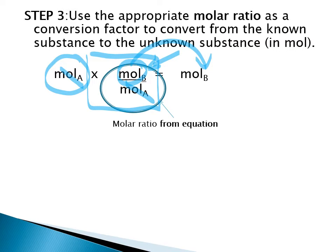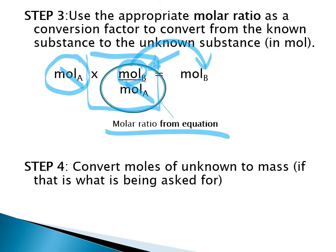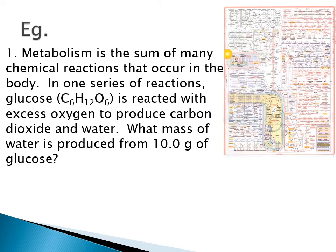That mole ratio from the equation is the only new part of stoichiometry; we're using the same conversion factor method as before. We know how to convert between particles and moles, and between mass and moles. Now, using a balanced chemical equation, we can convert from moles of one thing to moles of another, then convert those moles to mass. If the question only asks for moles you can stop there, but for solids we typically convert to mass at the end.